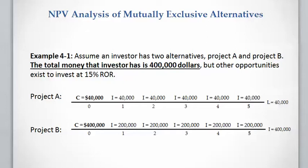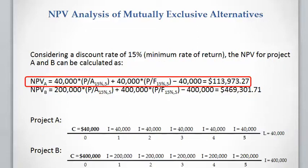Another method to evaluate a mutually exclusive project is the NPV analysis. Assume an investor has two alternatives, Project A and Project B. The total money the investor has is $400,000 and the minimum rate of return is 15%. First, we evaluate each project individually, then compare the projects that are economically satisfactory and choose the best one.